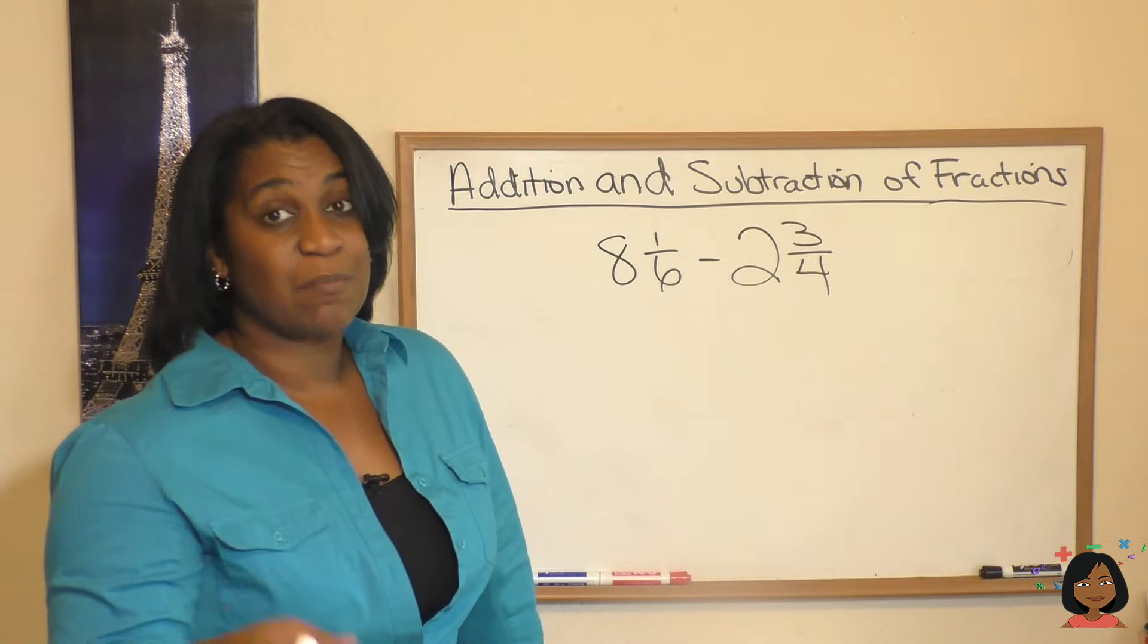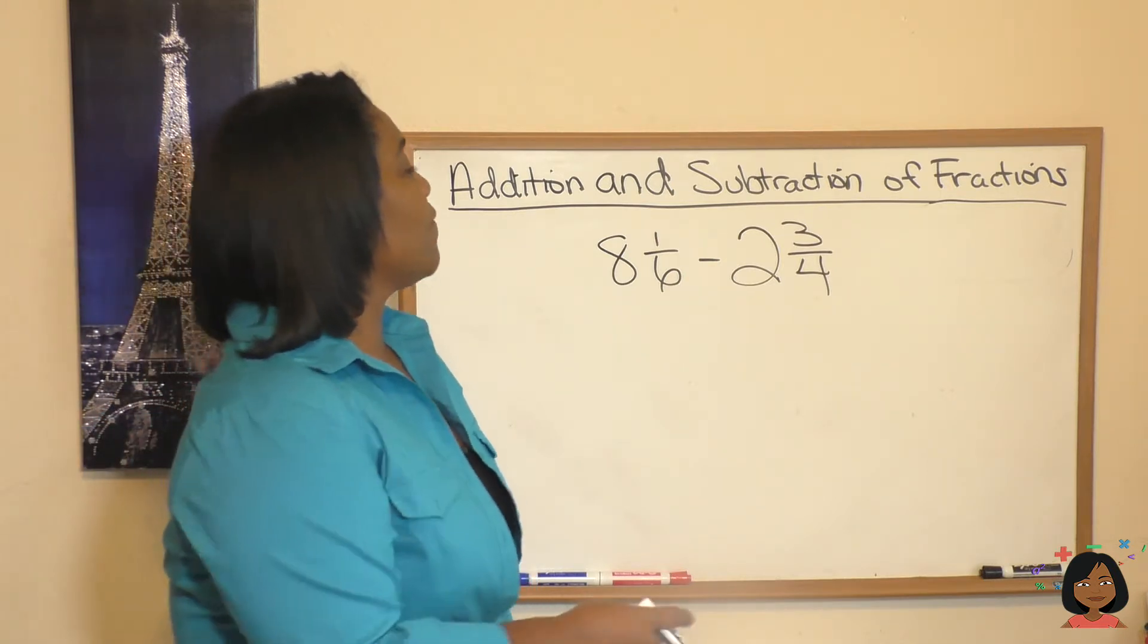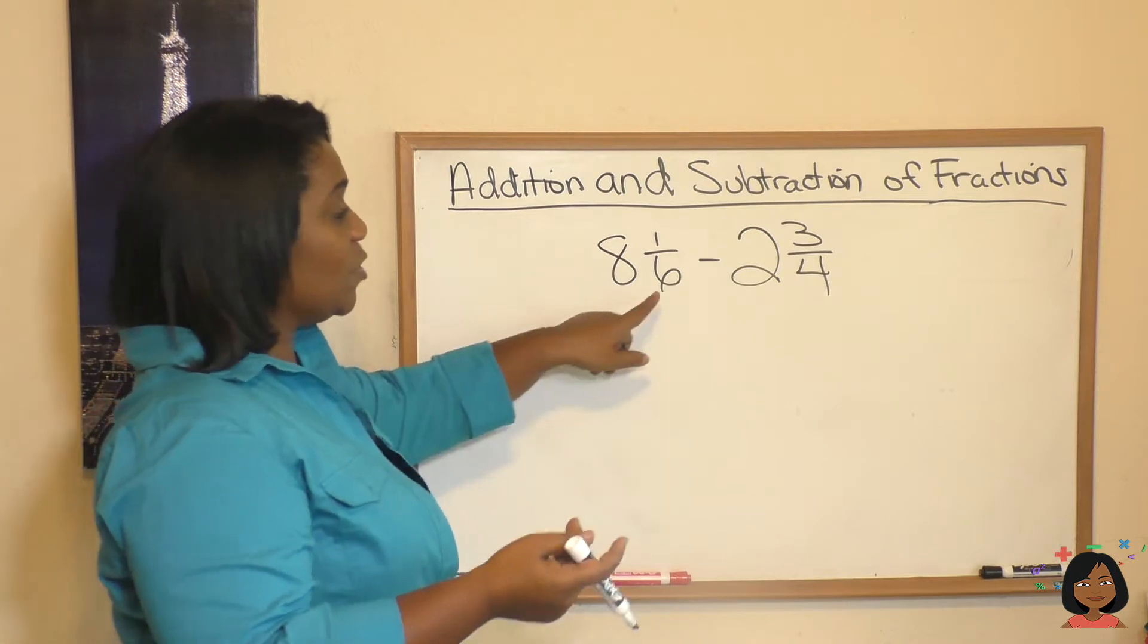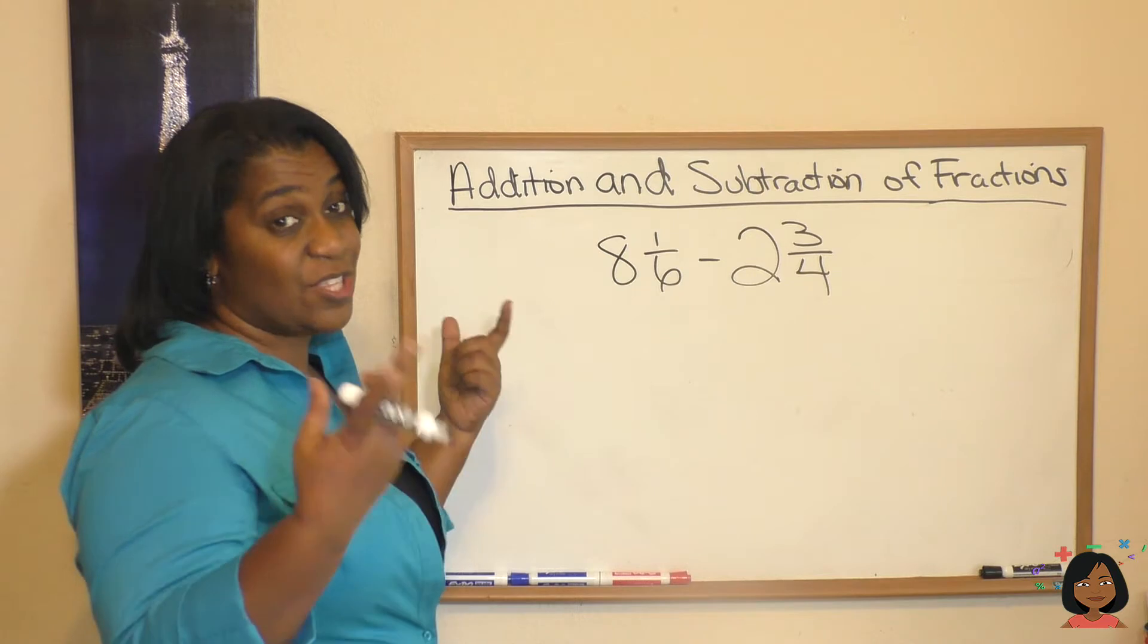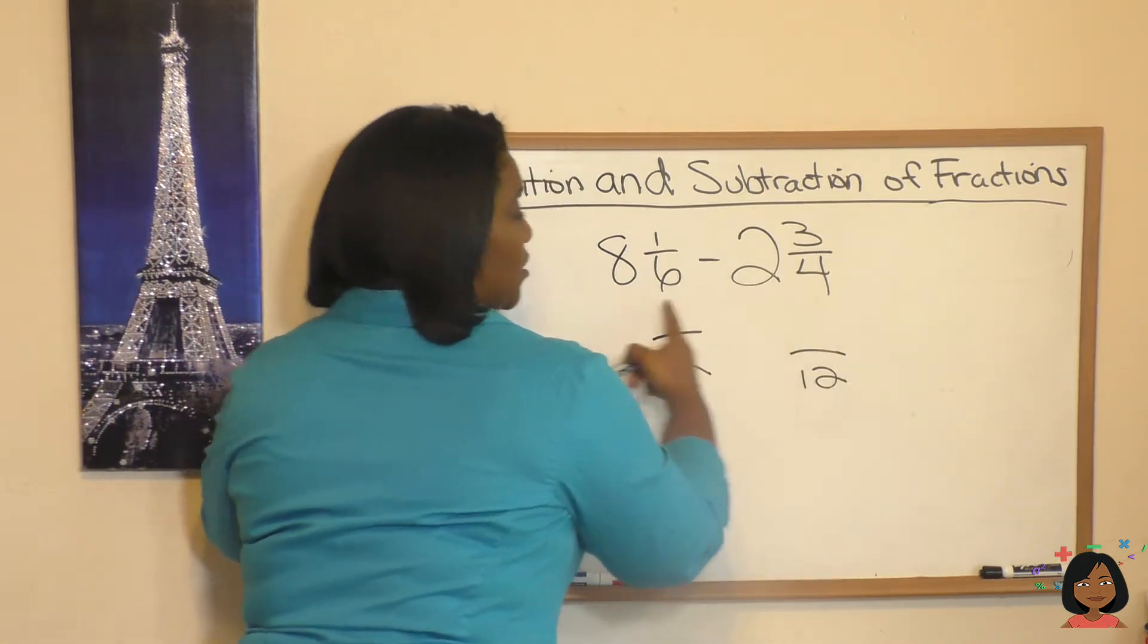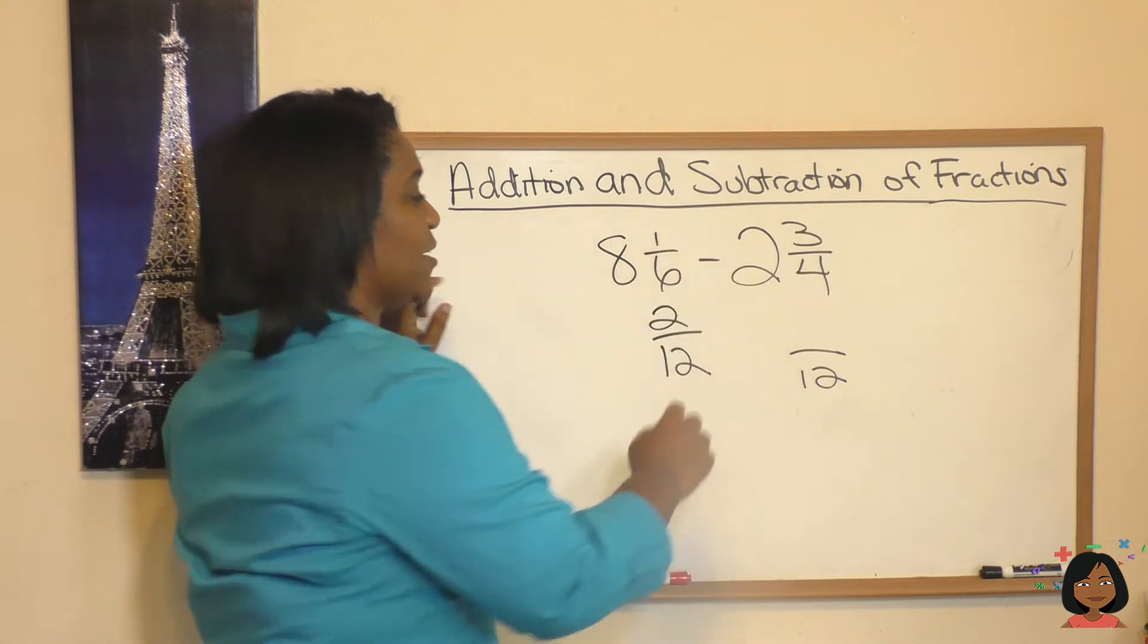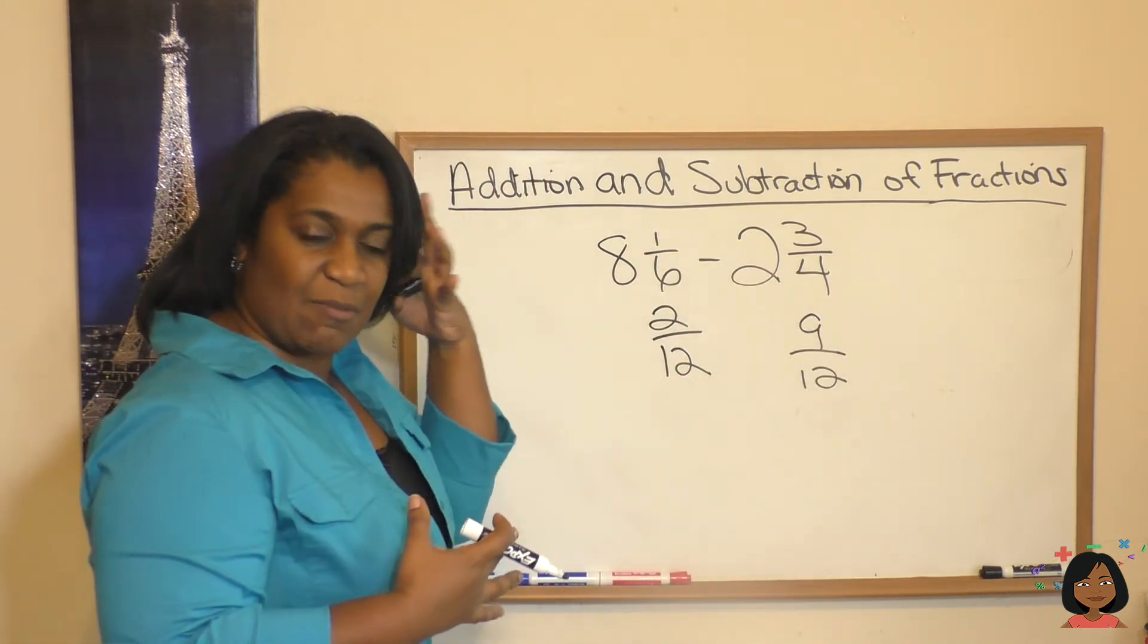Now let's tackle mixed numbers with subtraction because some different things happen here. So first of all, let's go ahead and convert our fractions to their least common multiples. We've got 6 and 4. We already did that in the last problem. We know that that's going to be the number 12. It's going to be the least common multiple. So 6 times 2 and then 1 times 2. So this is 2 twelfths. 4 times 3 is 12. 3 times 3 is 9.